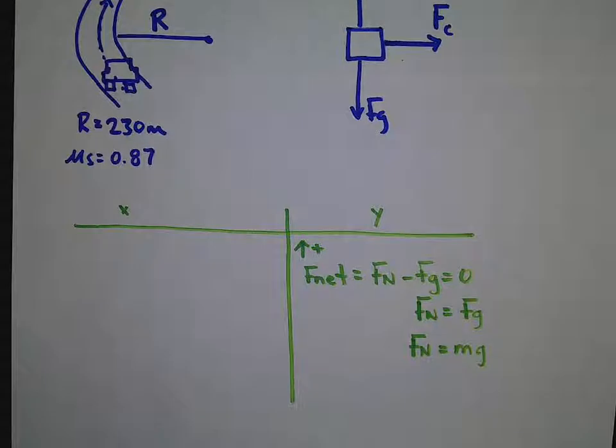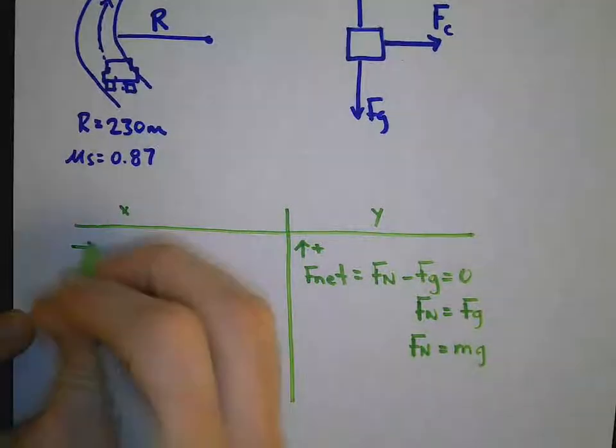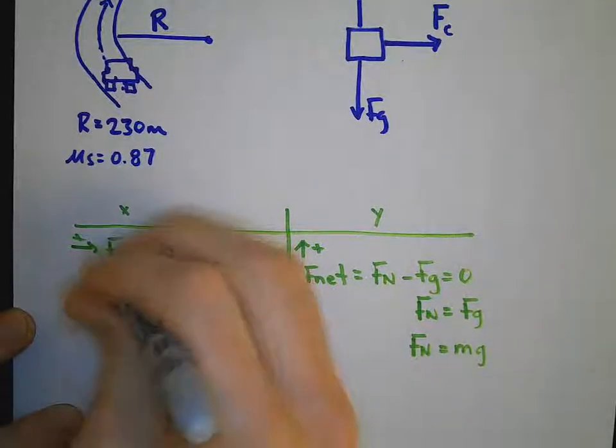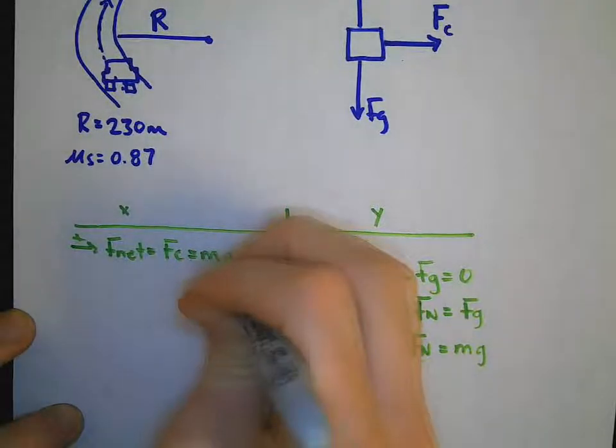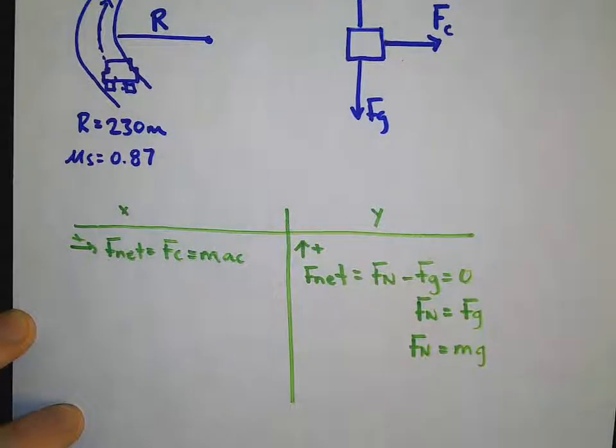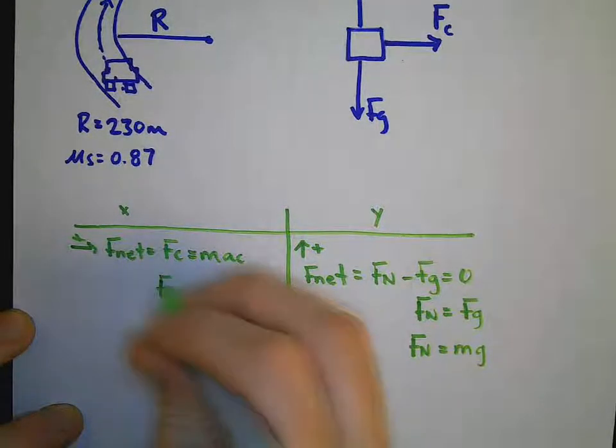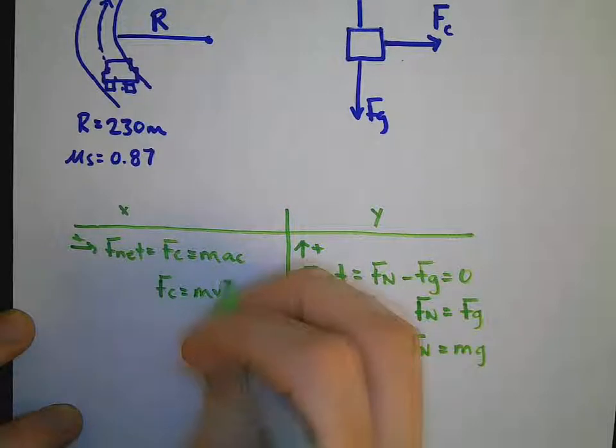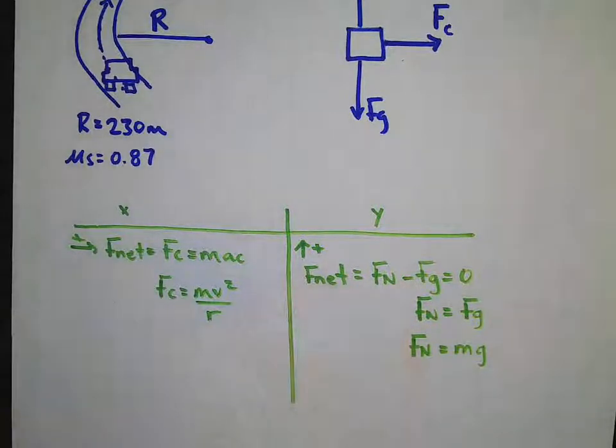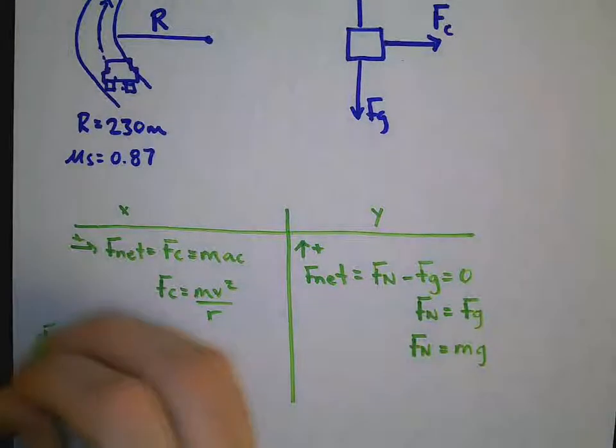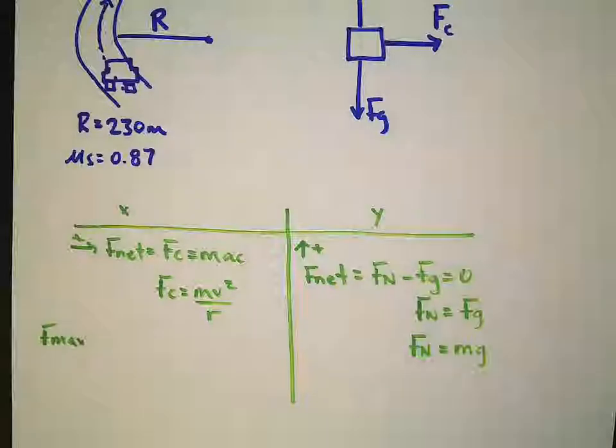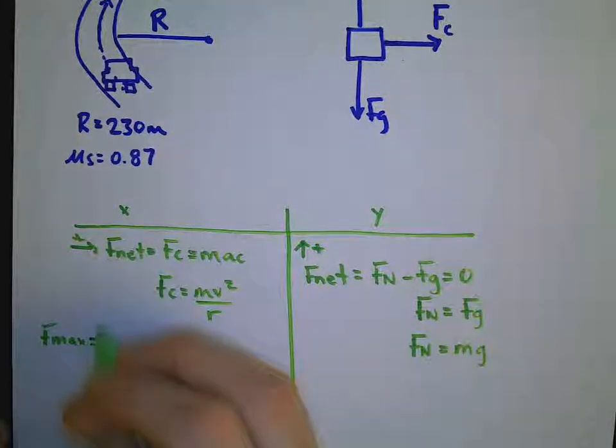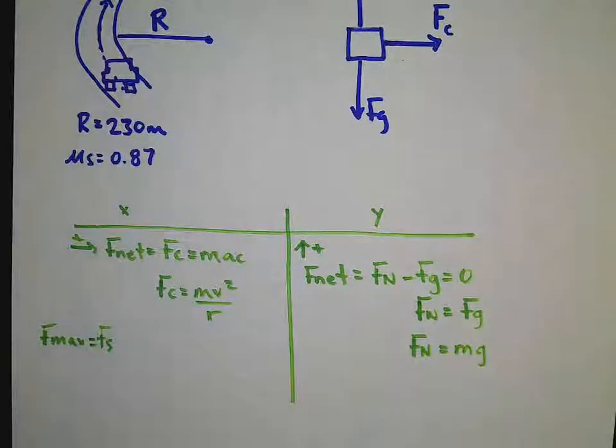And if I notice in my x direction, if I call center seeking positive, my net force is going to be my centripetal force, which is mass multiplied by centripetal acceleration. So that is Fc is mv squared over r. But in this question, what I'm looking for is the maximum force that helps the car around the corner. Well, the only way that that can happen is if my maximum force is my force of static friction.